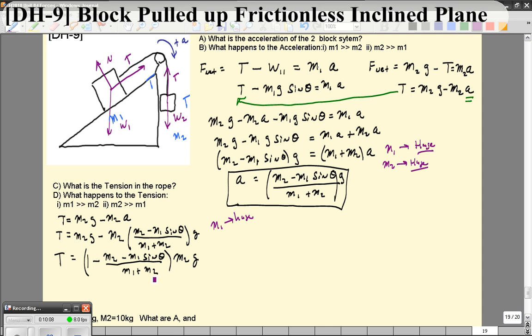And if M2 is really huge, you wind up with this being effectively 0, this being effectively 0, 1 minus 1, or 0, you wind up with basically no tension. Which makes sense, because this mass hardly slows it down at all, it may as well not even be there. So you get a tension that's equal to 0.